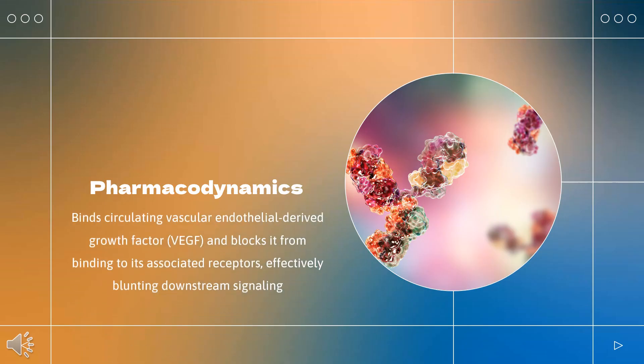Pharmacodynamics: Bevacizumab binds circulating vascular endothelial-derived growth factor (VEGF) and blocks it from binding to its associated receptors, effectively blunting downstream signaling. The effects of Bevacizumab have been shown to re-establish normal vasculature at the tumor site, resulting in increased nutrient and oxygen supply, while also improving the delivery of chemotherapeutic drugs to the target area. On the other hand, VEGF signaling is a vital component of several processes including angiogenesis, lymphangiogenesis, blood pressure regulation, wound healing, coagulation, and renal filtration. Although blocking VEGF may inhibit metastatic disease progression, it may also result in unintended effects due to the role of VEGF in several other physiologic processes.